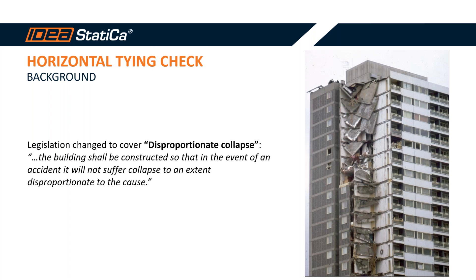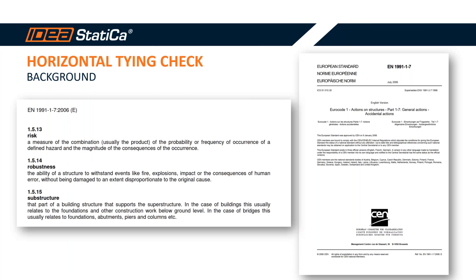In principle, this means that the building shall be constructed so that in the event of an accident, it will not suffer collapse to an extent disproportionate to the cause. In the context of the Eurocodes, avoiding disproportionate collapse is part of the strategies defined in Eurocode 1991-1-7 for limiting the extent of localized failures. A structure with the ability to limit localized failures is considered able to provide structural robustness — the ability to withstand accidental effects like fire, explosions, etc., without being damaged to an extent disproportionate to the original cause.